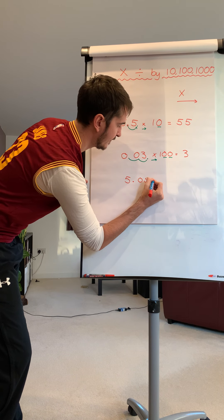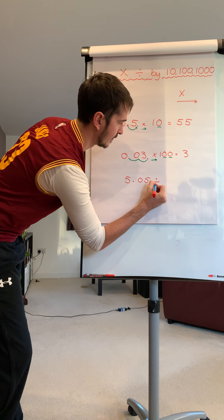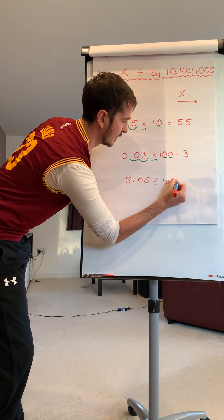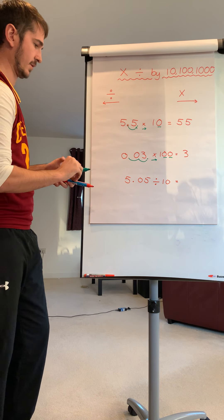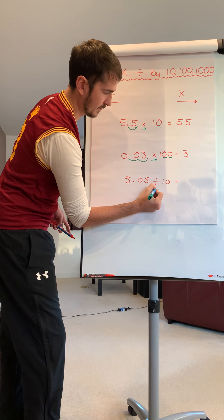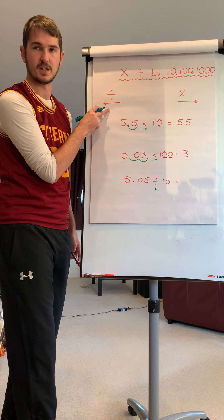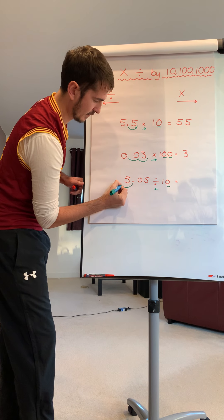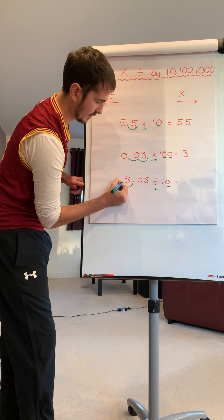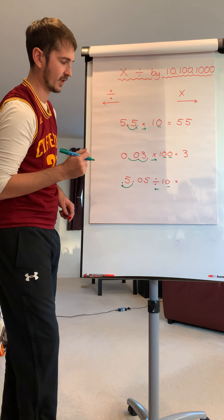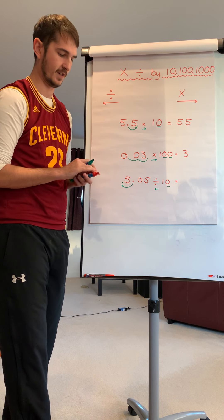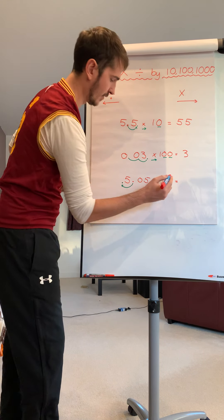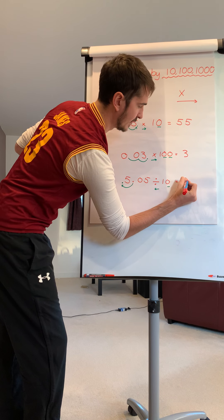Let's do one division. So 5.05, and we're going to divide it by 10. This time, division is telling me it's going to move to the left, and it's going to be one place. So I've got my decimal point now in front of the five, so I've got 0.505. I need to put a placeholder before the decimal point.